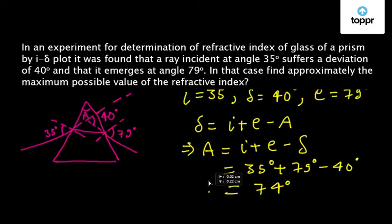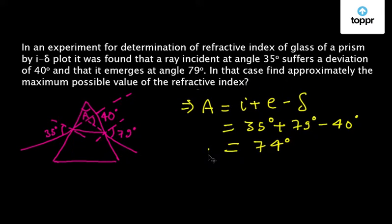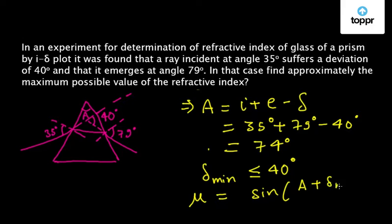From the question, we can write that the minimum angle of deviation, that is delta minimum, will be less than or equal to 40 degrees. Now if we calculate the refractive index of this prism, it can be given by the relation mu equal to sine of A plus delta minimum by 2, by sine of A by 2.